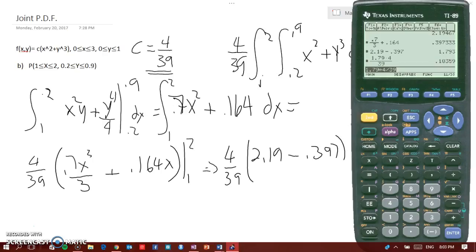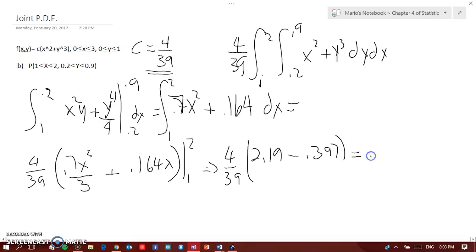So it'll be 1.79 times 4 divided by 39. When you compute it you get 0.183 or 0.184. This is the probability that X is between 1 and 2 and Y is between 0.2 and 0.9. Now as you can see it took a long time with the calculations and all that.